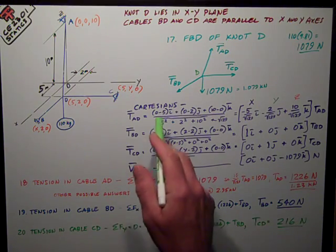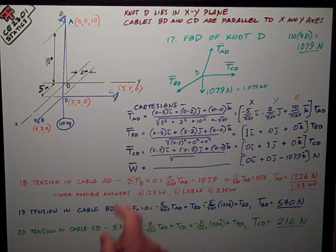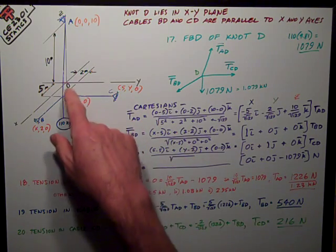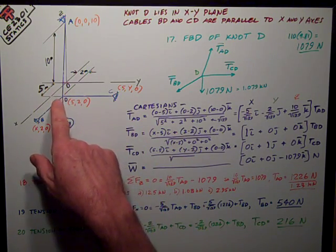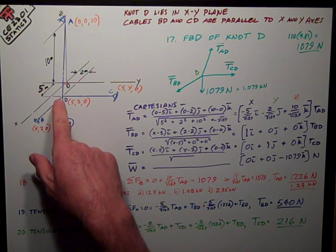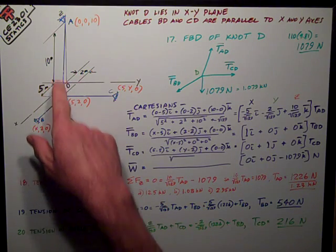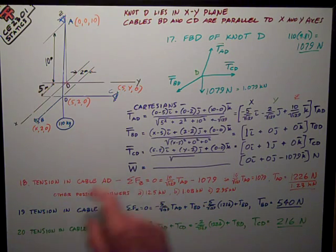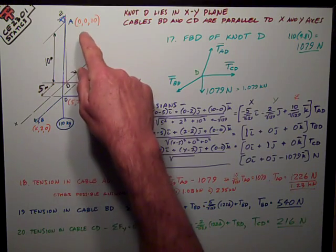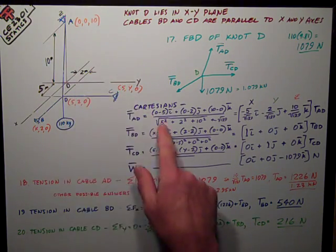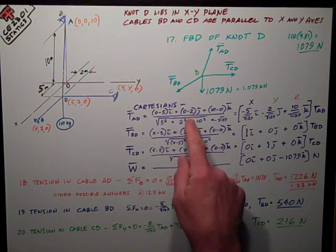Now I just need to get everything in Cartesian format. I'll do it in detail for TAD. Remember, I want really a directed force vector, like a position vector, from the point, the knot, where it's attached to the point it's headed towards, which is A. So it's the coordinates of A minus the coordinates of D, 0 minus 5i, 0 minus 2j, 10 minus 0k.